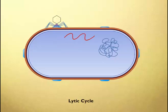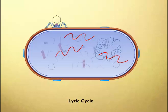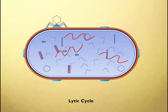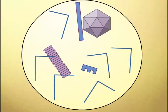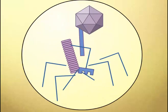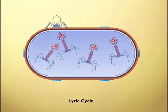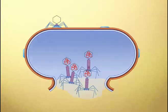In the lytic cycle, phage nucleic acid is replicated and phage genes are expressed, resulting in production of phage proteins. Mature phage particles assemble and the host cell lyses, releasing the phage particles.